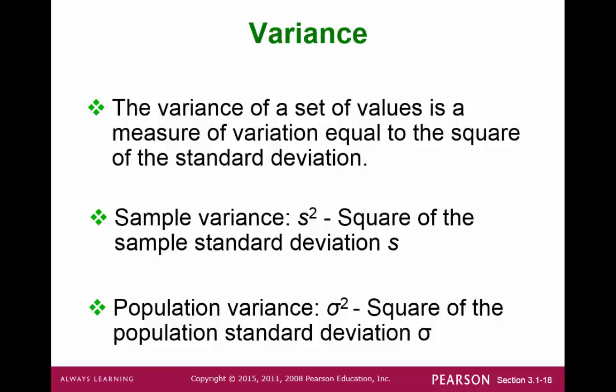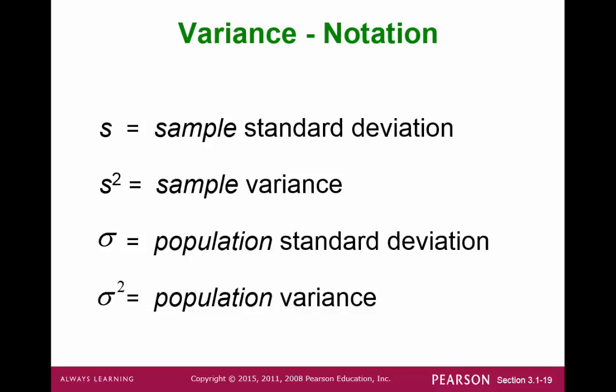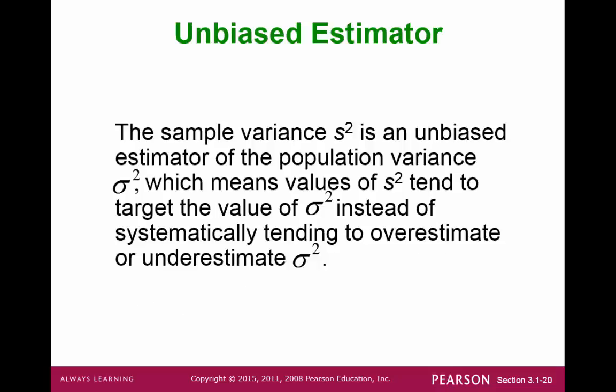The variance is simply the standard deviation squared. The notation is s squared or sigma squared — just imagine the standard deviation formula without the square root. Here is a summary of notation for the measures of variance. As a quick preview of inferential statistics, it turns out that the sample variance is a good estimator for the population variance.